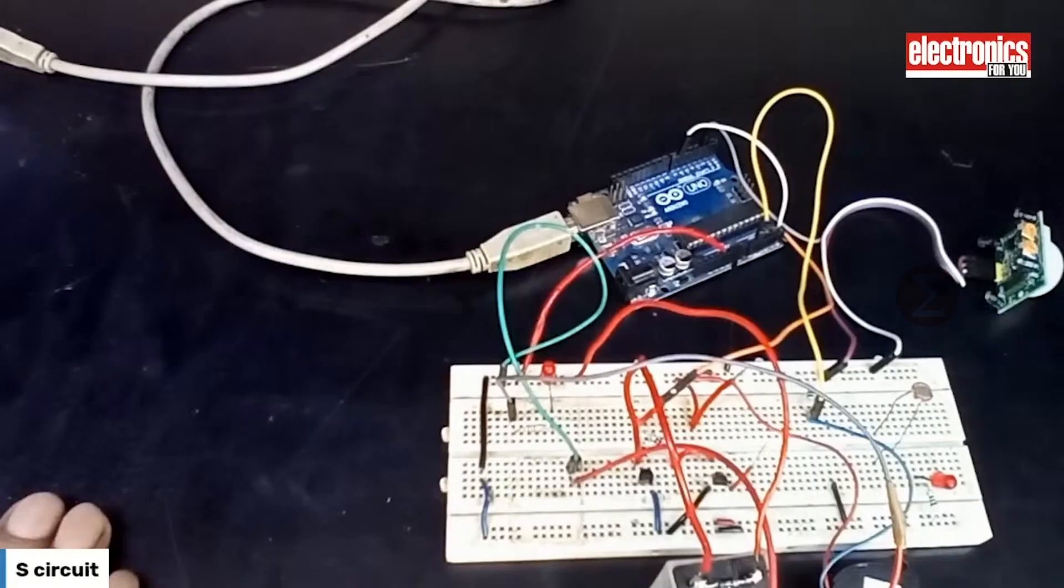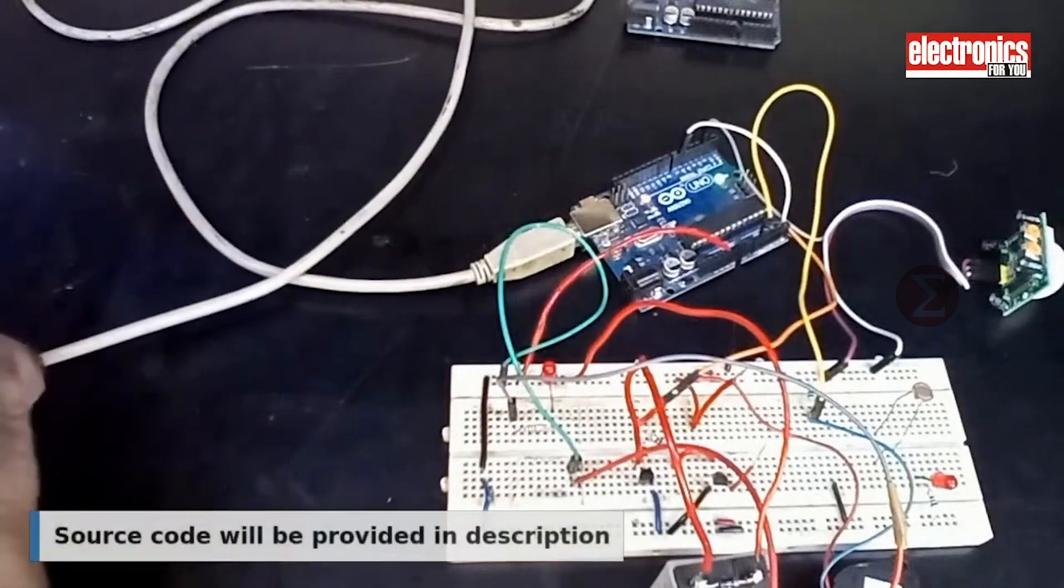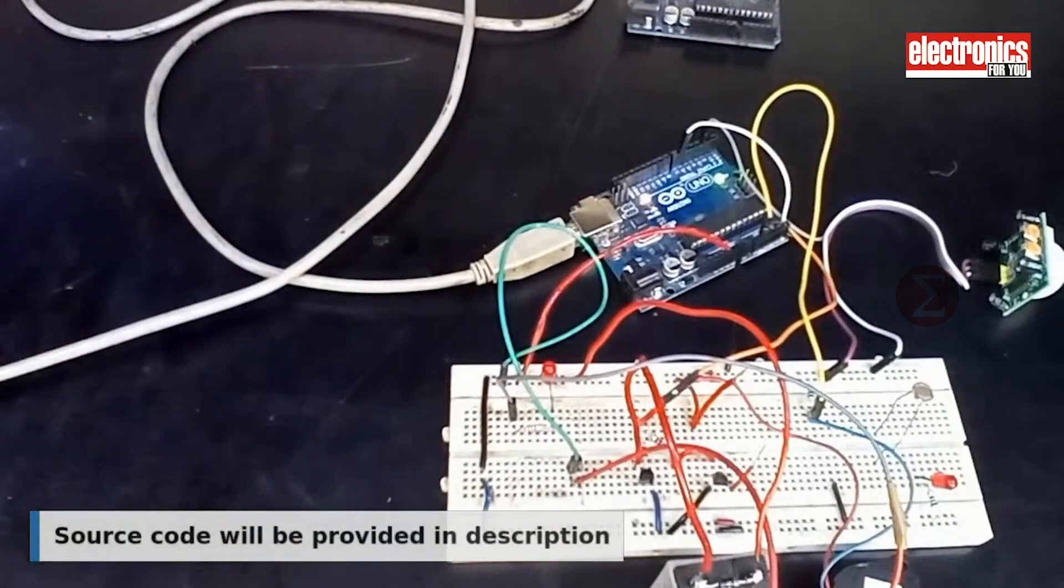To code Arduino Uno, install Arduino IDE on your computer. To upload the code on the Arduino board, connect your Arduino board to the computer and select port and board on Arduino IDE.